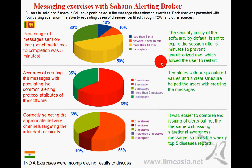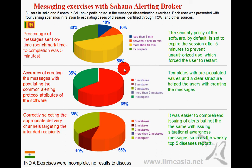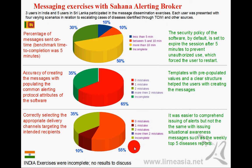We evaluated the system with users. One objective was to find out how efficiently and quickly they could create a message — only 50% were able to do that, because the GUI was not customized for this particular user group, which we can now address. Accurately entering values posed no problems; most completed this without mistakes. In terms of correctly identifying recipients, about 55% were able to do that, with some mistakes in identifying the correct recipient groups.